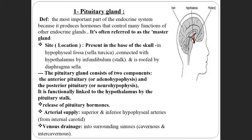Now we will discuss the pituitary gland. It is the most important endocrine gland, present in the brain. It secretes hormones and also controls the functions of many other endocrine glands. Because it controls all the endocrine glands in the body, it is called the master gland — it is the boss of all endocrine glands.